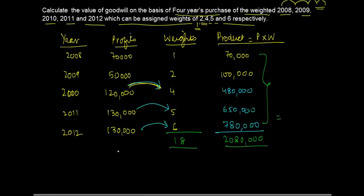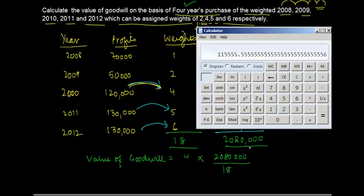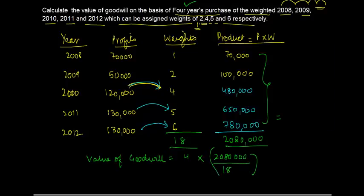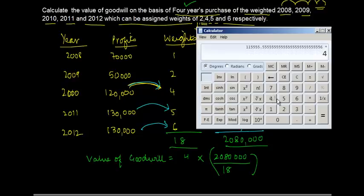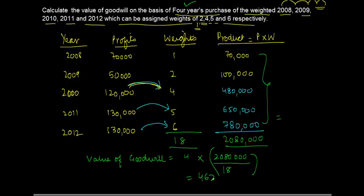So the value of the goodwill is equal to four years purchase which means four into weighted profits. How much is the weighted profit? Twenty eighty one two three divided by eighteen. Now I just got that value for you. When you divide twenty eighty by eighteen, this I need to multiply by four. And as I multiply it by four, what do I get? Four sixty two triple two. This is the value of the goodwill.